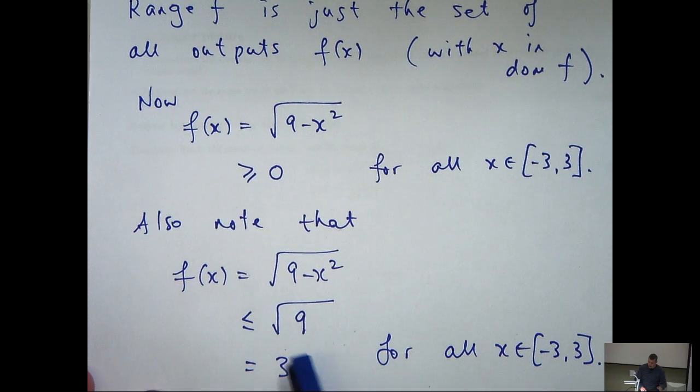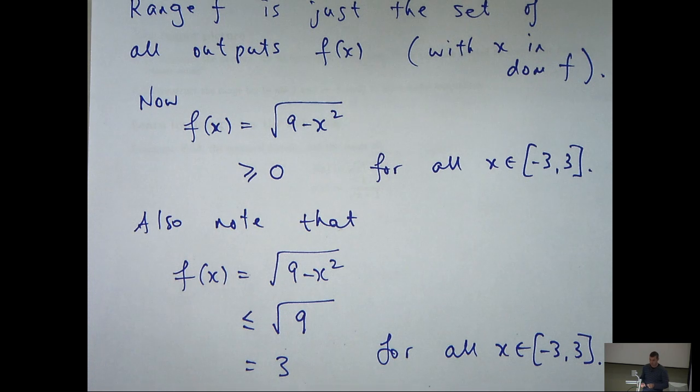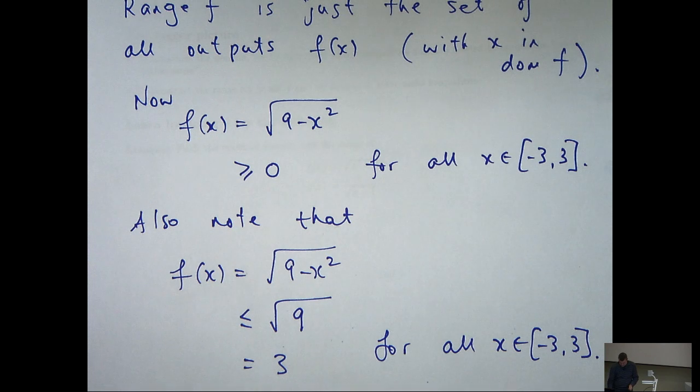Okay, so combining this inequality and this inequality, we see that the output has to be greater than or equal to 0, but less than or equal to 3. So this is the range.